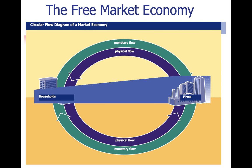In a free market economy, there's what you call circular flow. Take the household — that's us. If I need to buy new shoes, I take my money and give it to Nike. Nike takes the shoes they made and gives them to me. The monetary flow goes from the household to the firm. The physical flow — raw materials, land, labor, capital — goes into the firm, they make the shoes, and the cycle repeats.